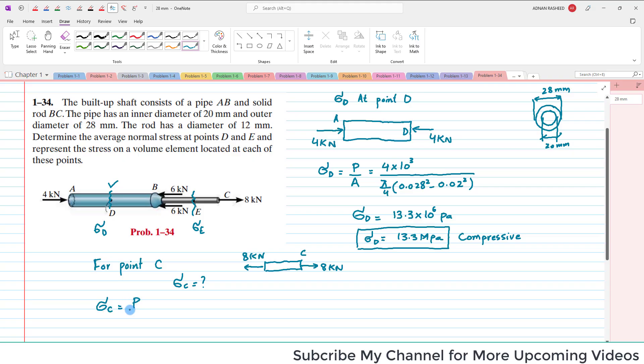Sigma C will equal force per unit area, or load per unit area. So the load is 8 kilo Newtons, 8 times 10 to the power 3. Divided by, this is solid rod having diameter 12 millimeters, that is given. So 12 millimeters equals 0.012 meters. The area of this solid rod is pi by 4 d squared, so d is 0.012 squared.